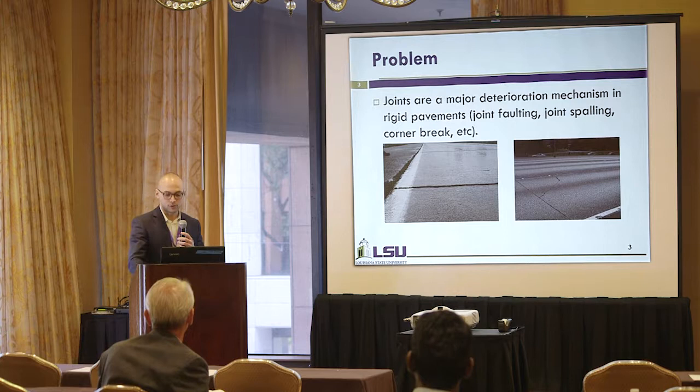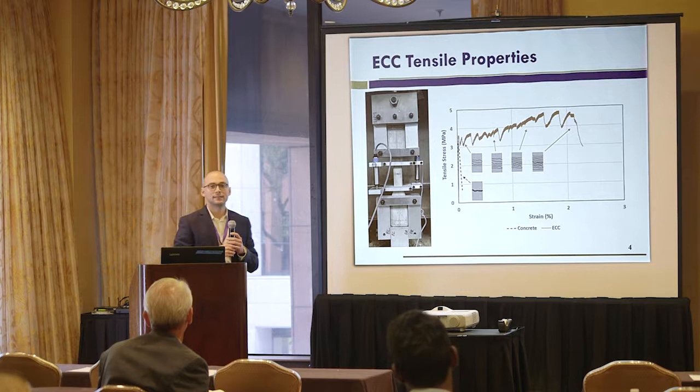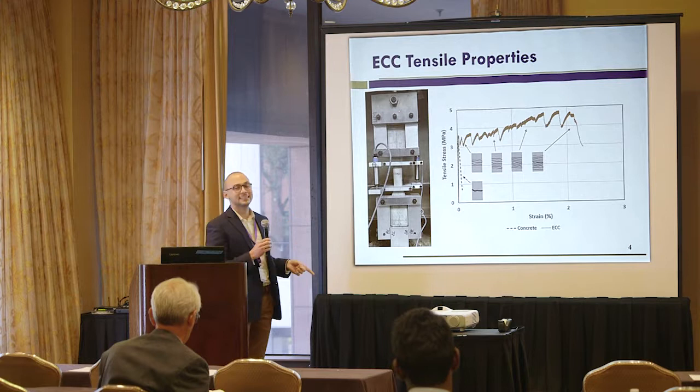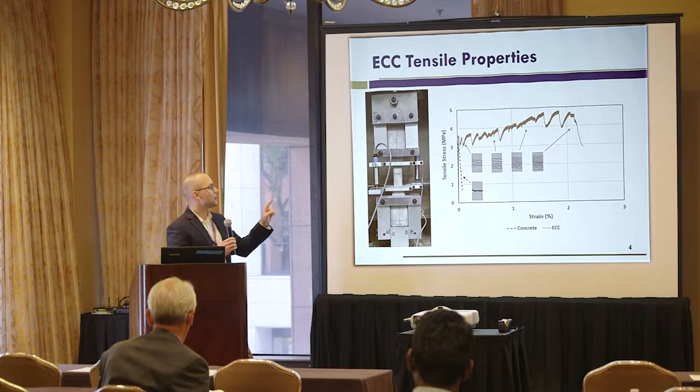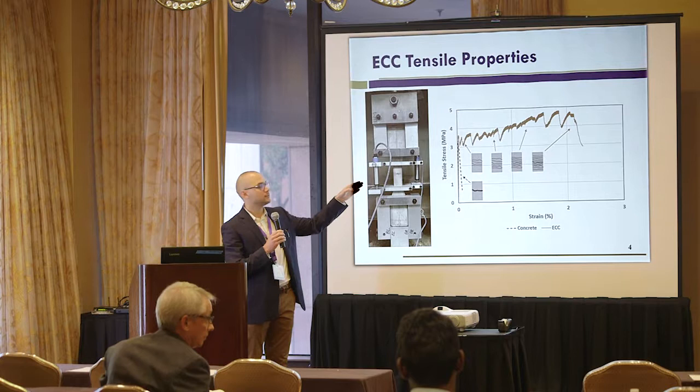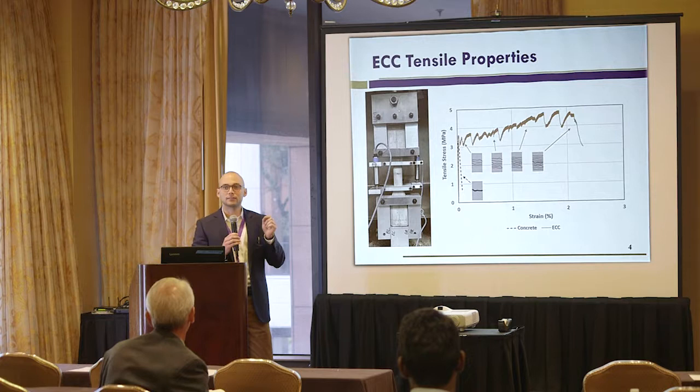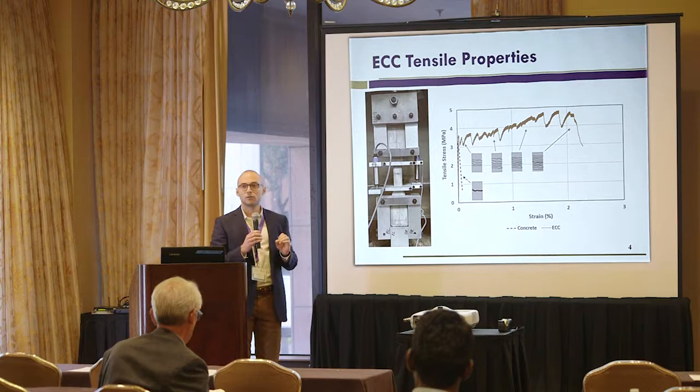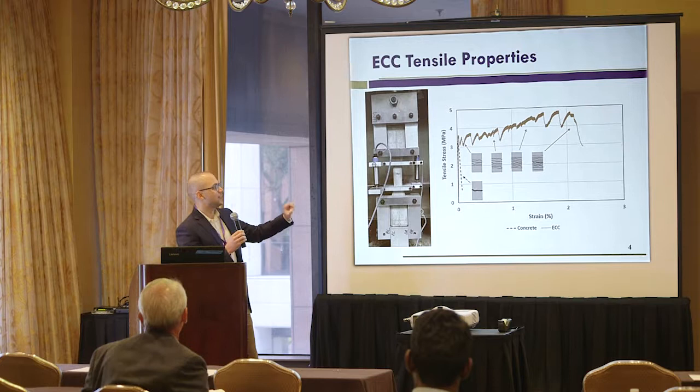This is a quick example of the difference between ECC and traditional concrete. In a direct tensile test — this is the setup we use in our laboratory — typical concrete will go into distress very quickly in tension, and then you'll have a sudden crack generation and a sudden drop of load. So as soon as you have a crack in concrete, you lose all load carrying capacity. However, with ECC materials, you actually have that first crack, and then you have what is called a strain-hardening phenomenon.